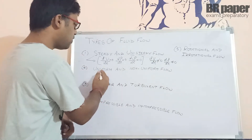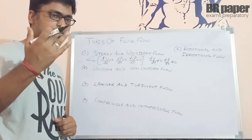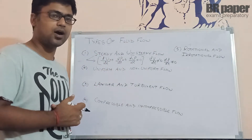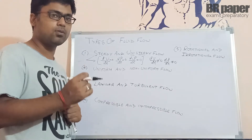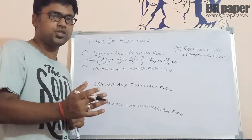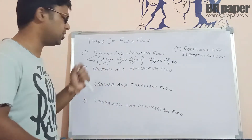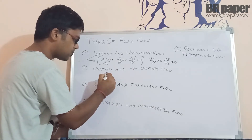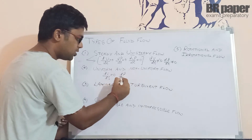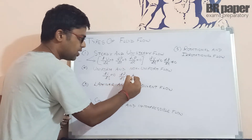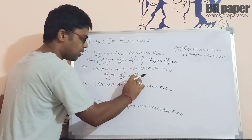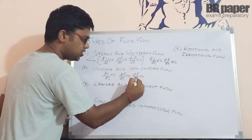The second type is uniform flow and non-uniform flow. Considering the same properties — velocity, pressure, and density — if these properties are changing from point to point, they are known as non-uniform flow. If they are not changing from point to point, it is uniform flow. So if dv/ds = 0, dp/ds = 0, and dρ/ds = 0, meaning properties are not changing with respect to space, it is uniform flow.